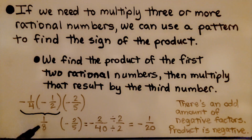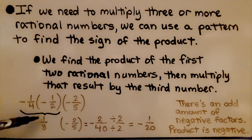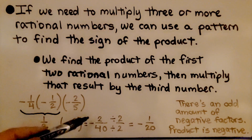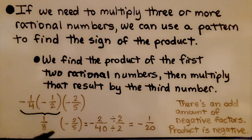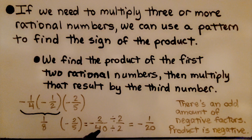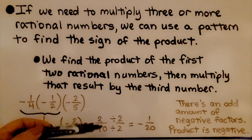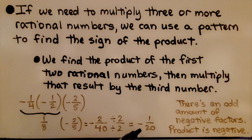Now we multiply one-eighth times negative two-fifths. We have one times two is two, and eight times five is forty. We have a negative two-fortieths because we have unlike signs. We can simplify this by dividing both the numerator and denominator by two to get negative one-twentieth.